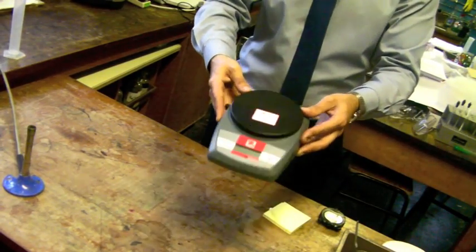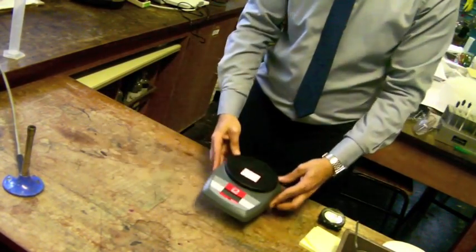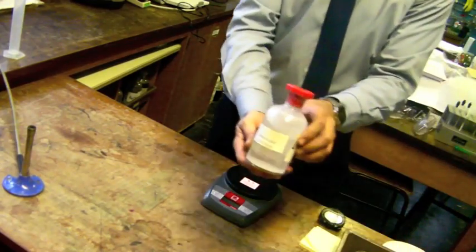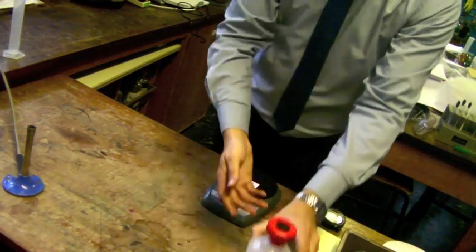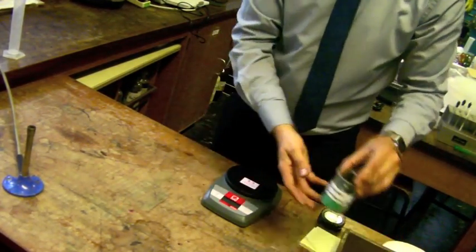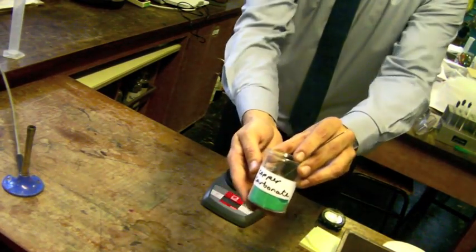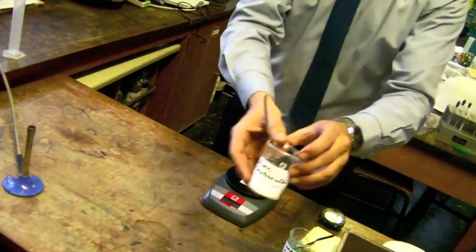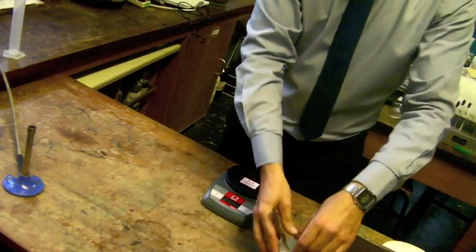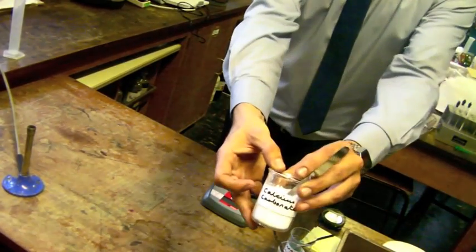You will need an electronic scale, a flask of lime water, a beaker of copper carbonate, zinc carbonate and calcium carbonate.